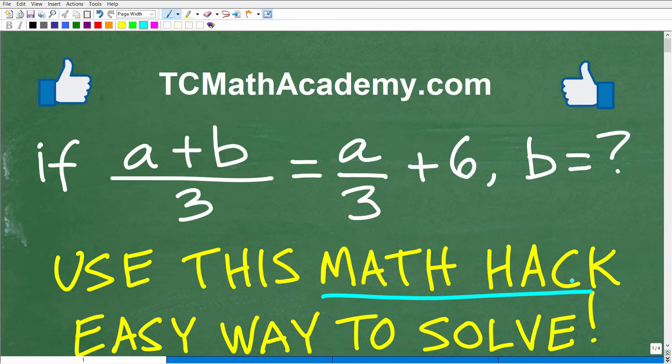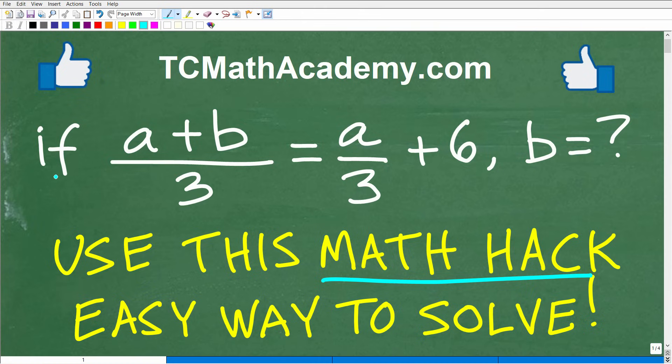Of course, I'll show you that in just one second, but let's take a look at the problem, and that is if A plus B over 3 is equal to A over 3 plus 6, well, what is B equal to? All right, so if you can figure this out, go ahead and put your answer into the comment section.